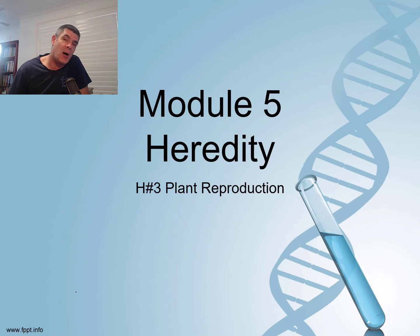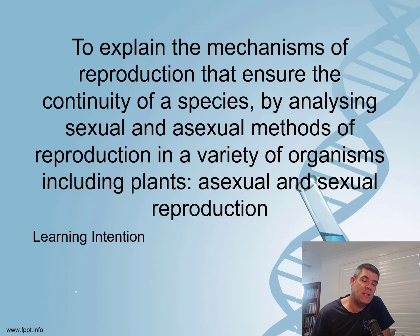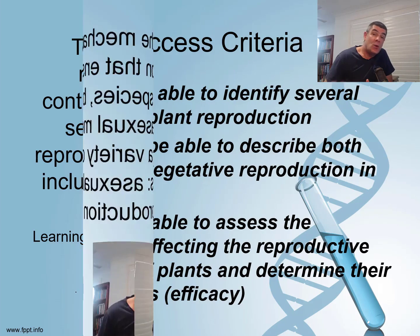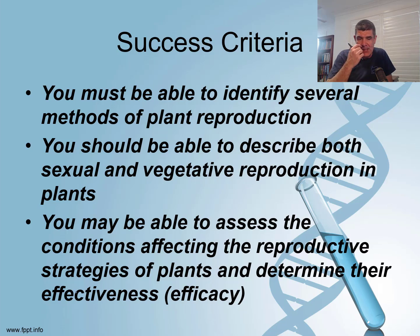Hi students, welcome to Year 12 Biology and Module 5 Heredity. This is video number 3 and we're going to very quickly skate through plant reproduction. This learning intention is a follow-on from the ones we've previously looked at, about the mechanisms of reproduction that help ensure continuity of the species by analysing sexual and asexual methods of reproduction specifically relating to plants. We want to make sure that we can identify a number of different ways in which plants reproduce and describe sexual and vegetative reproduction in plants.